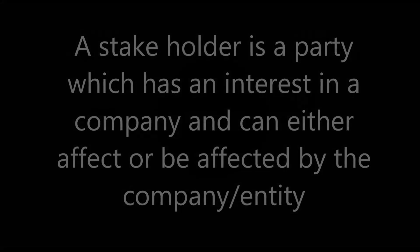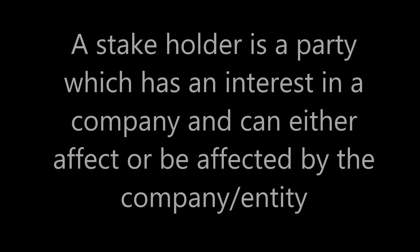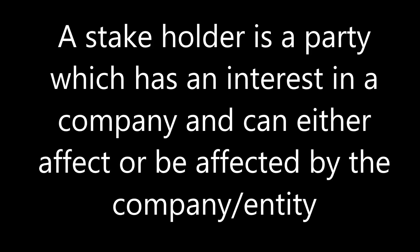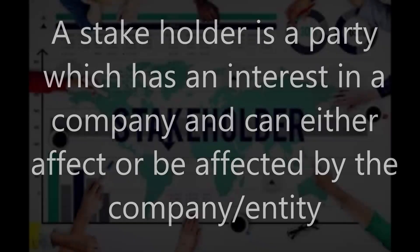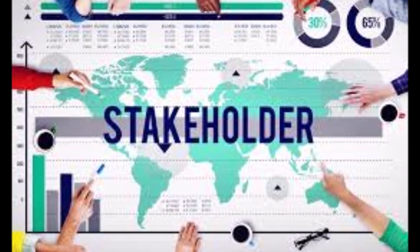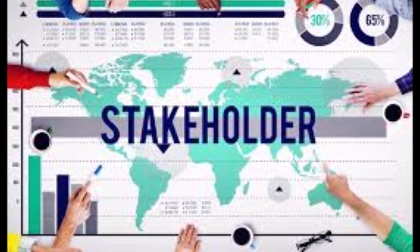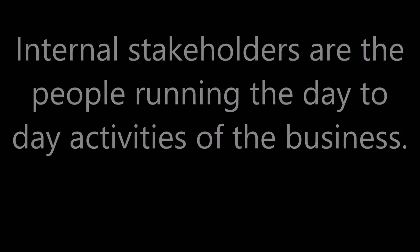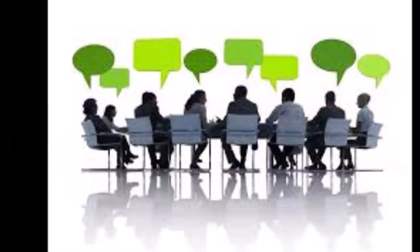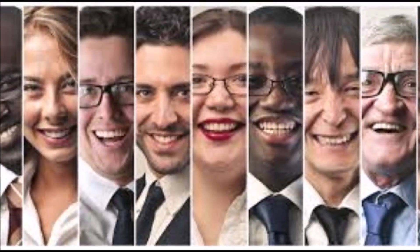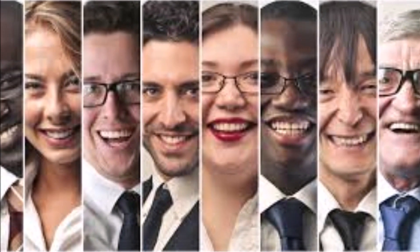A stakeholder is simply a party which has an interest in a company and can either affect or be affected by the company's operations. We have two types of stakeholders. Internal stakeholders are the people running the day-to-day activities of the business, and these include employees, managers, and boards of directors — entities that are within the business.